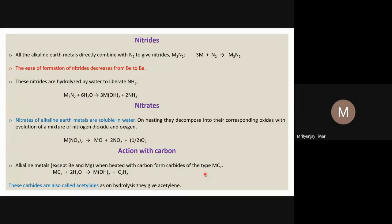Most of the trends in properties of alkaline earth metals are due to the polarizing power, ionic size, or the charge on the cation and anion. By reasoning through these factors, one can answer many questions intuitively.